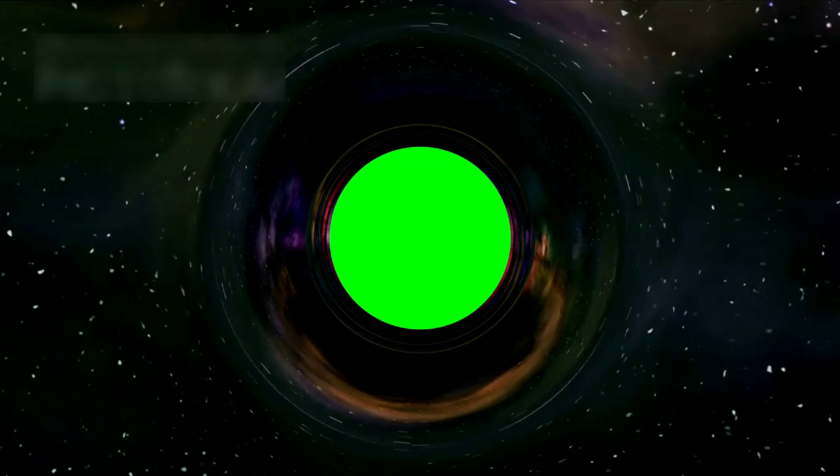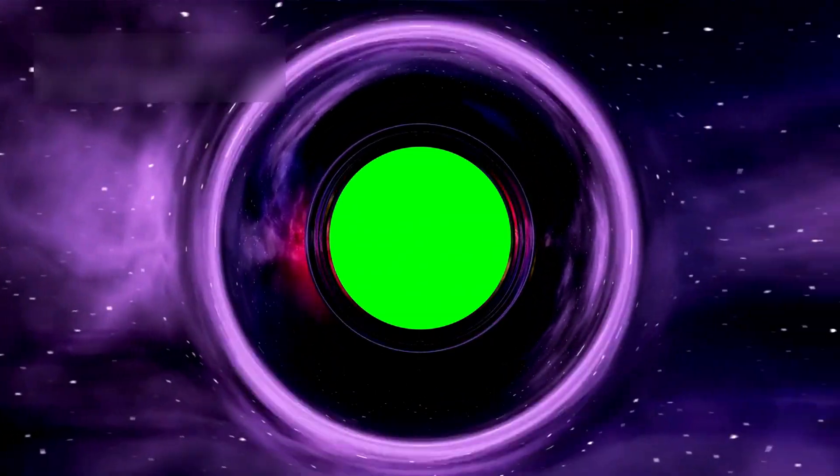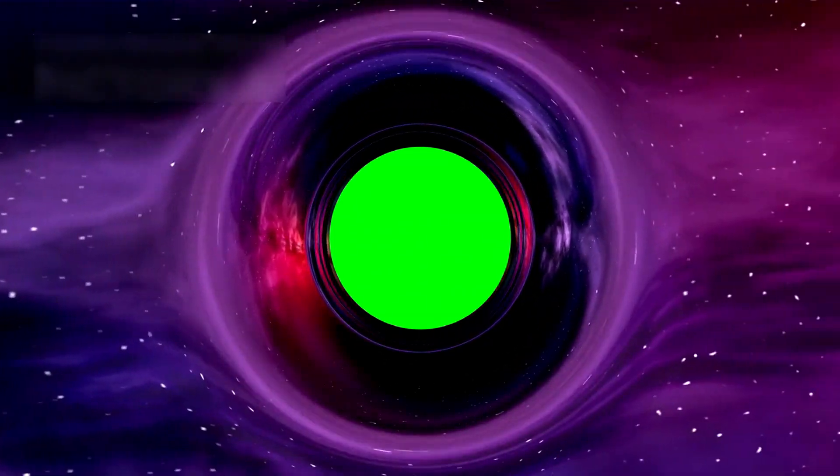These rays escape only if they take bent paths, winding around the black hole's pull. Imagine trying to throw a ball past a whirlpool—only a curved throw makes it out. This same principle lets light particles escape the gravitational doom of a black hole.